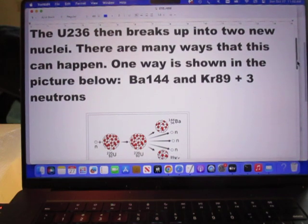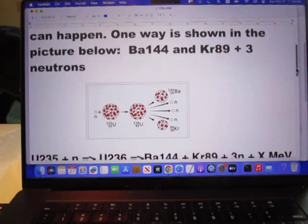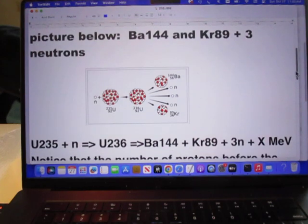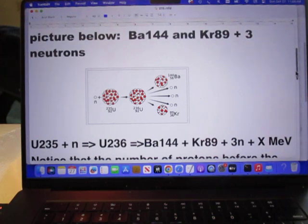One way is shown in the picture below. You get barium-144 and krypton-89. That's due to the fission. But you also get three neutrons.